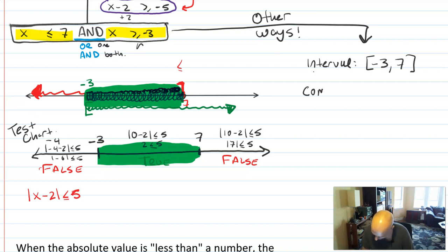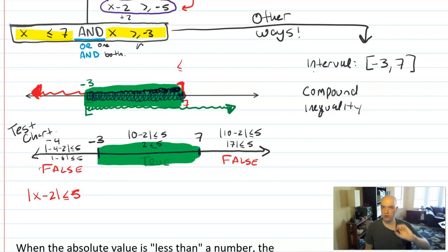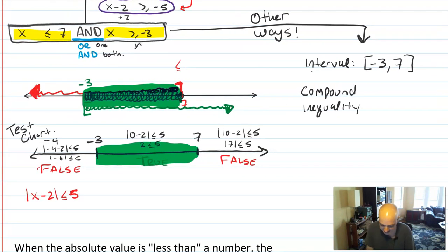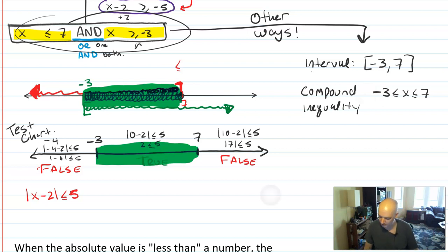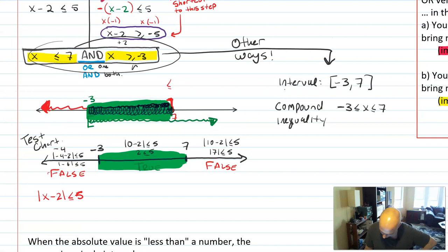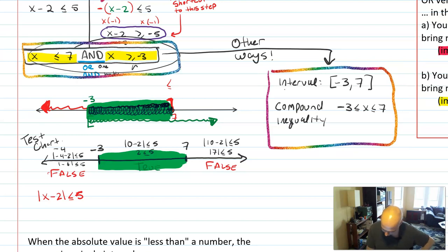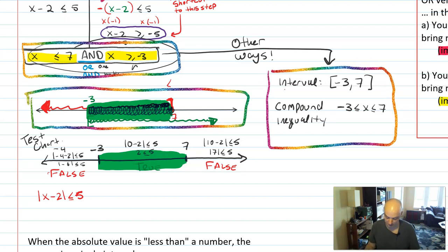Looking at the graph, I identify the place where the two graphs overlap. That's why I use the word 'and.' I could also describe this as an interval: from negative 3 up to positive 7 with brackets, since it's an inclusive inequality. I could write a compound inequality: negative 3 less than or equal to x less than or equal to 7. But compound inequalities can only be used when x is sandwiched between two numbers — that's the 'and' situation. Those are four different ways to answer this problem.